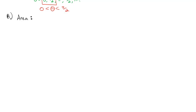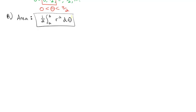Now let's use that to actually do what we wanted: find areas. Finding an area in polar coordinates is similar to rectangular coordinates in that we take an integral from a to b, but with a key difference — we take one half times the integral from a to b of the radius squared dθ. That is the big formula for today: one half times the integral from a to b of r² dθ.